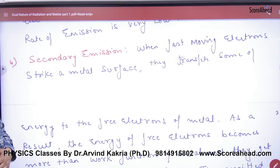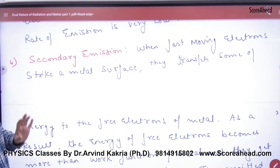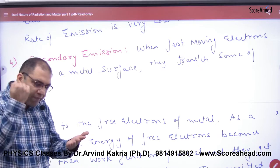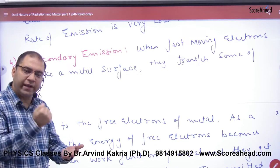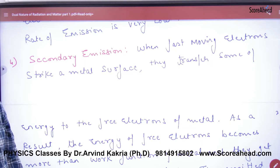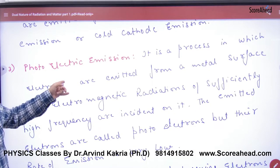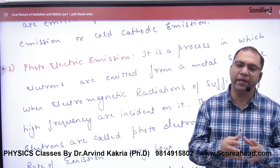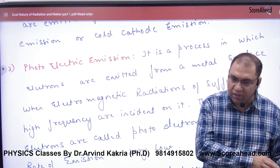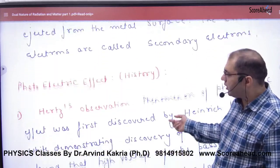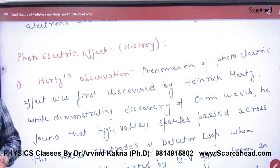The next method is secondary emission. In secondary emission, when a fast-moving electron strikes a metal surface, it transfers its kinetic energy to electrons inside the metal, and those electrons gain enough energy to leave the atom. This is called secondary emission. We are not interested in this for our chapter. Our focus is photoelectric emission — but it is good to know there are many ways to remove electrons from a metal surface. We will discuss the history of this topic next.